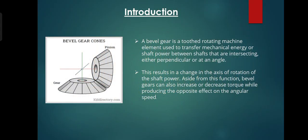Introduction about bevel gear. Bevel gear is a rotating machine element used to transfer mechanical energy or shaft power between shafts that are intersecting either perpendicularly or at right angles.